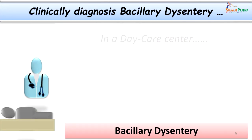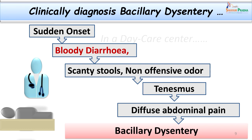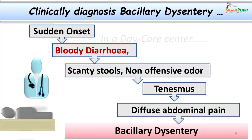In Gowri's case, we suspected bacillary dysentery, and the clinical diagnosis was also bacillary dysentery because there were supportive clinical findings. Points in favor included: the episode started very abruptly, initially as watery diarrhea that very soon turned bloody, the stools were scanty and non-offensive in odor, there was evident tenesmus, and she had diffuse abdominal pain. These points differ from amoebic dysentery, so it is important to know the clinical differences to guide the right treatment.